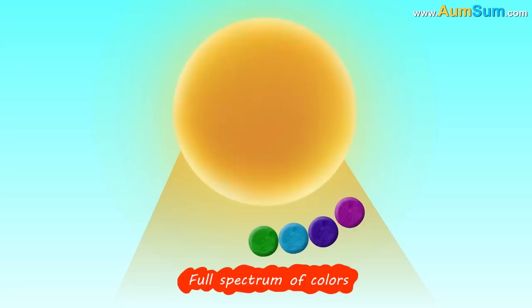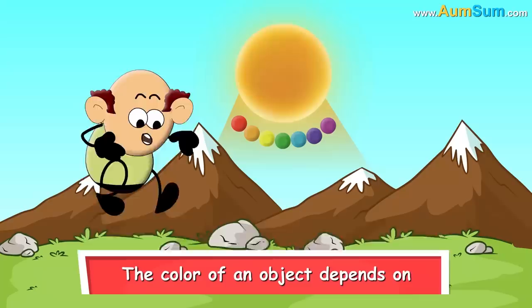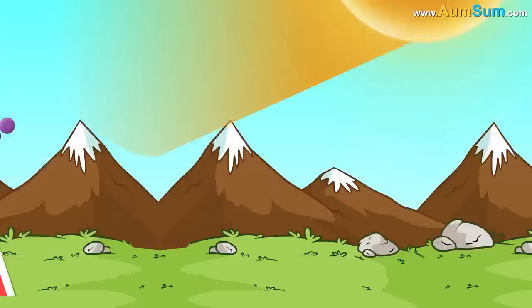Sunlight is comprised of a full spectrum of colors including violet, indigo, blue, green, yellow, orange and red. The color of an object depends on which color of sunlight it reflects.